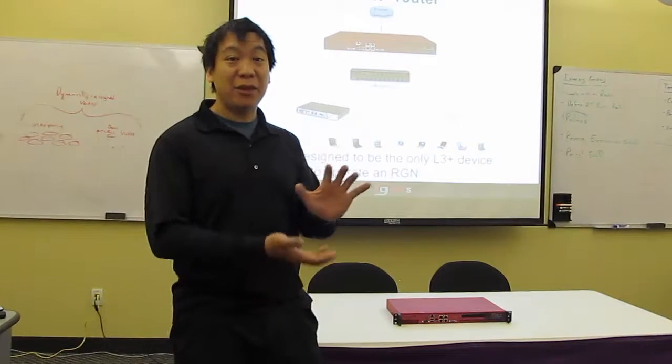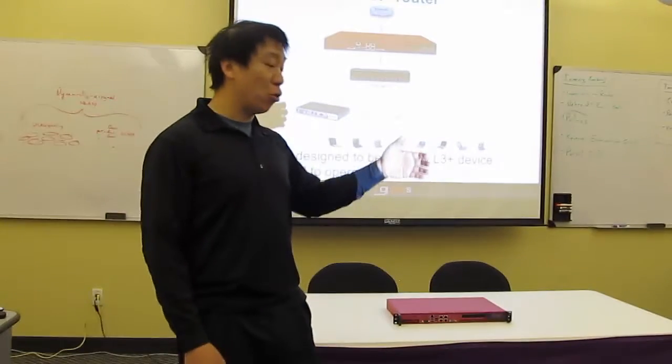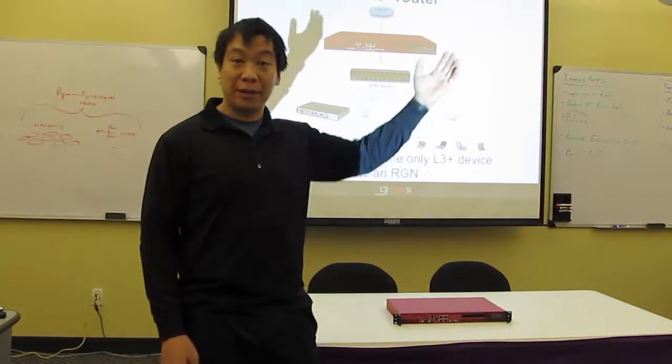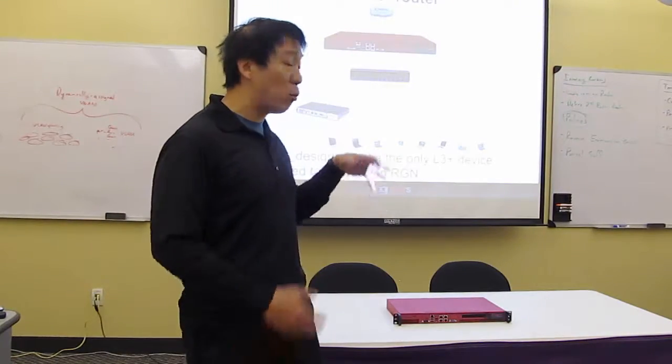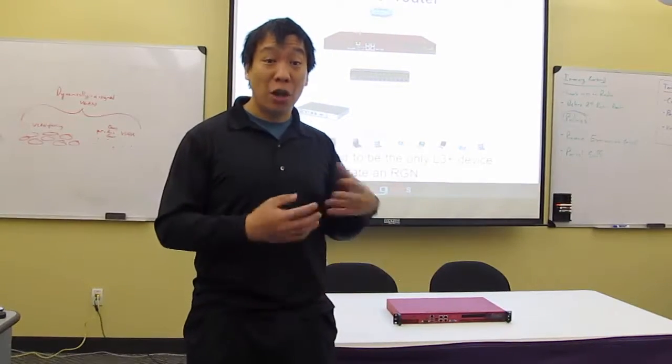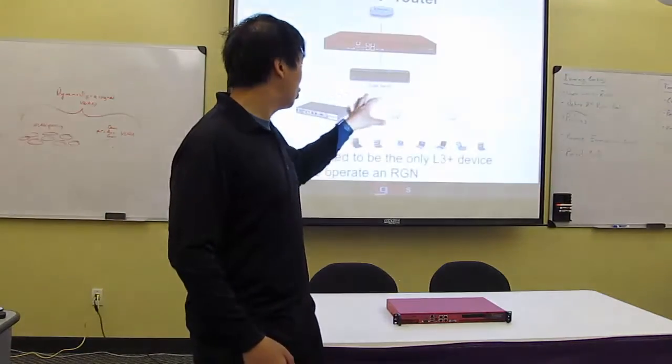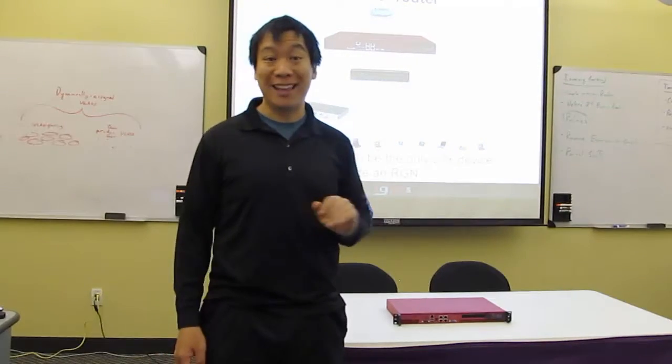We've compressed everything you need, starting with L3 routing all the way up to the application layer, billing and things like that, into a single device. When you look at a typical RXG deployment, you see nothing between the distribution network and the internet other than this one device, the RXG.